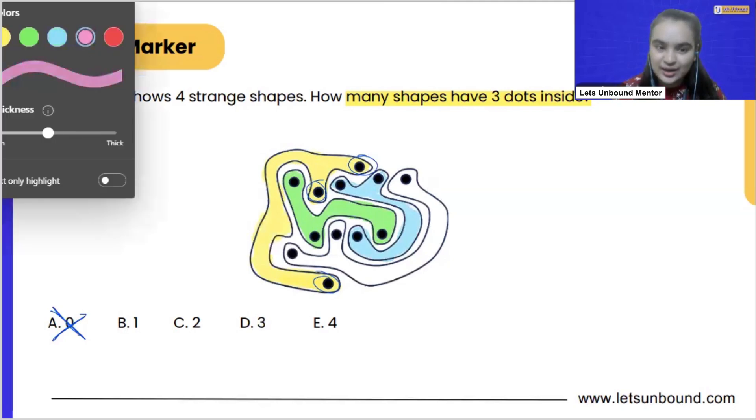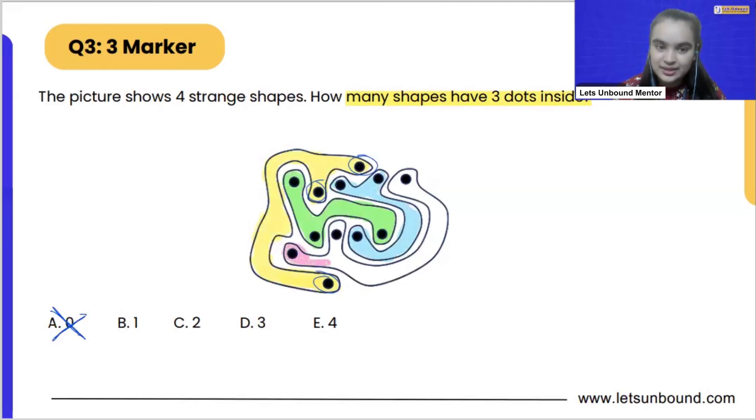So we got all four shapes. There are four strange shapes which is given in the question. And all four shapes are having three dots inside it. This pink one is also having three dots inside it. So we got our correct answer. That is option E, four.